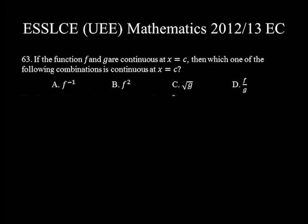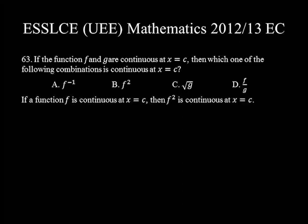Question number 63. If functions f and g are continuous at x = c, then which one of the following combinations is continuous at x = c? If f is continuous at x = c, then f² is continuous at x = c. The other expressions may or may not be continuous. The correct alternative is choice B.